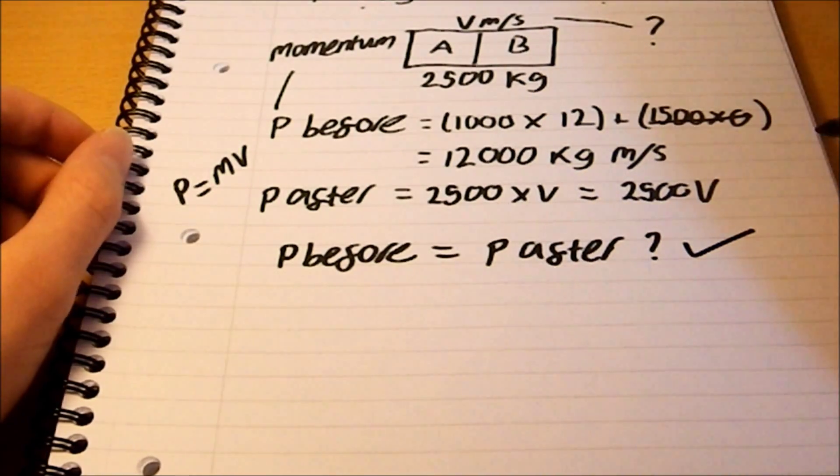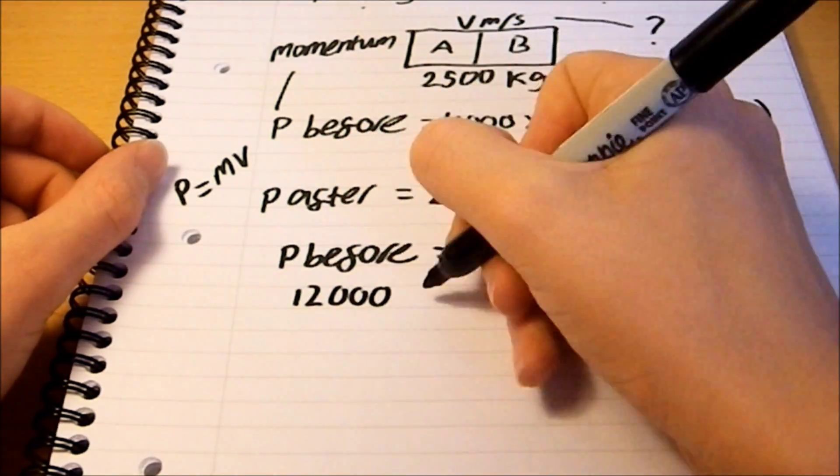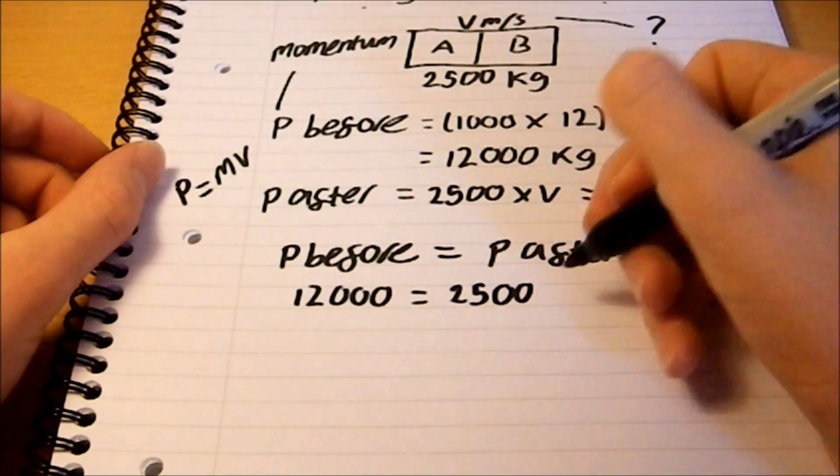Yes, so 12,000 kilograms meters per second is equal to 2,500V.